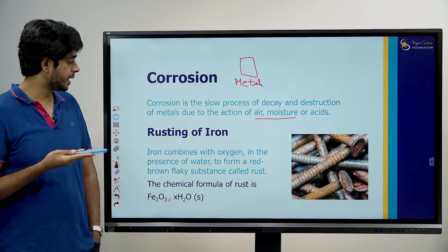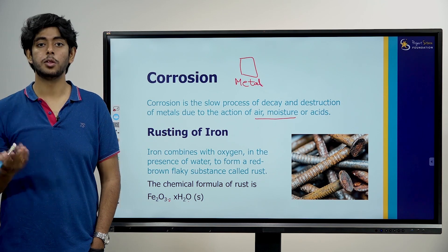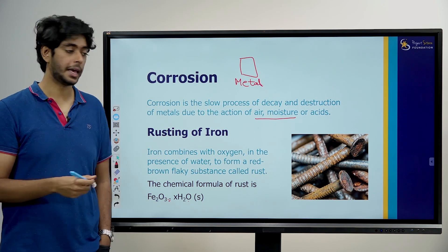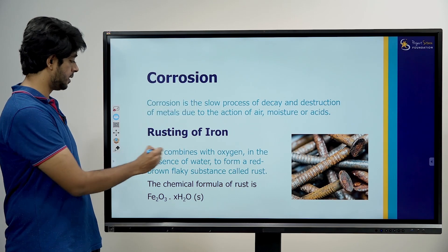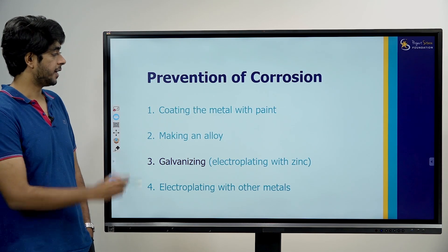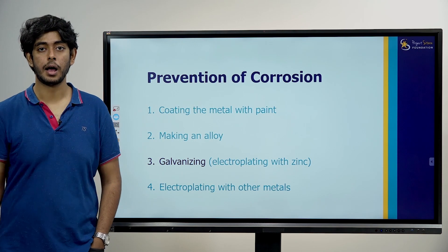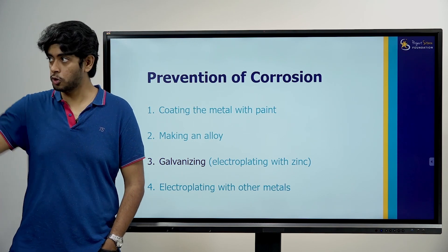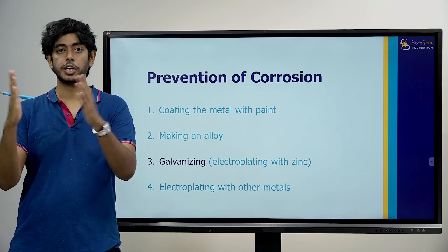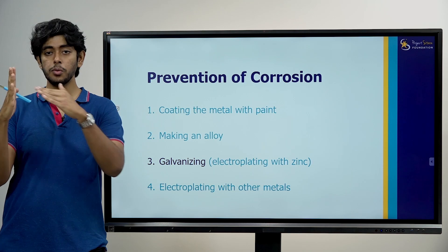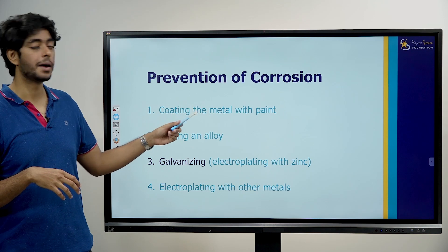If you have corrosion or rust, you need to know how to stop it. How to prevent it — a few methods: the first one is coating the metal with paint. You coat the iron with paint so that oxygen and moisture cannot react with the metal. With paint, the rusting will stop.